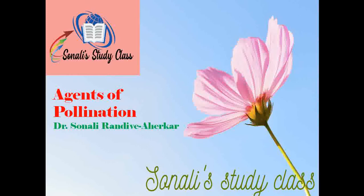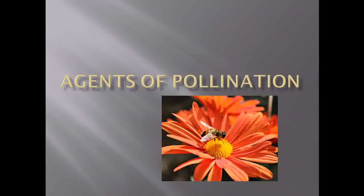If we observe self-pollination, the most important criteria to achieve it is that the flower must be bisexual. That's why in self-pollination, there is no need of any agents. But when we observe cross-pollination, the plants will need different types of agents to carry out the pollen grains from one place to another place, and those agents we are going to discuss in detail today.